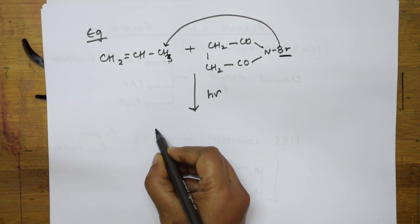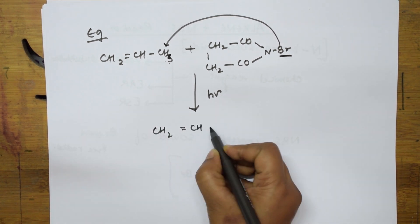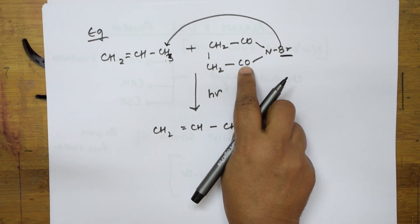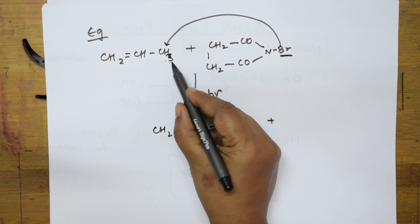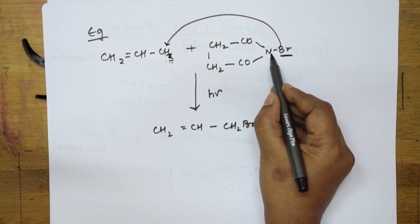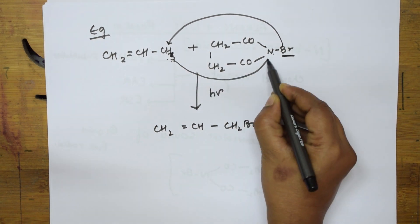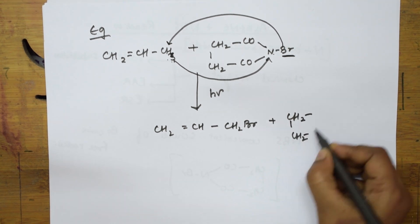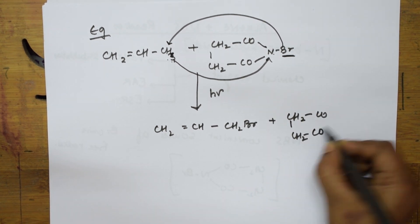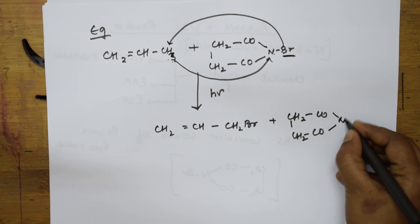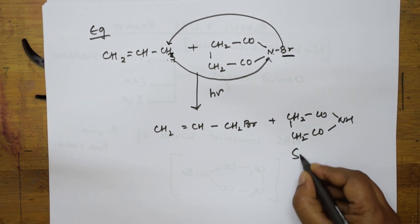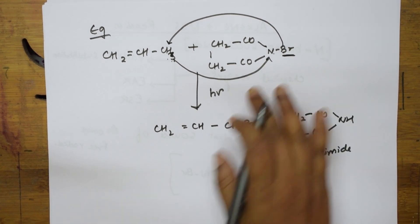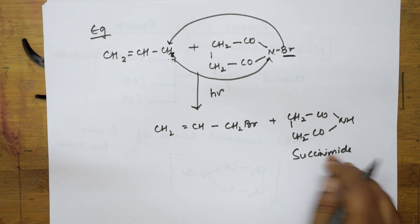What product do I get? I get CH2=CH-CH2Br. Now, what happens to the NBS side? The hydrogen that was removed comes and adds to the nitrogen of NBS. This becomes CH2-CO-CO-NH — that is succinimide. So the products are the allylic bromide and succinimide.